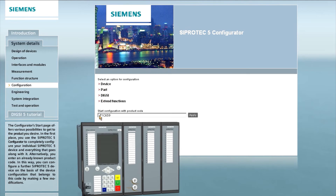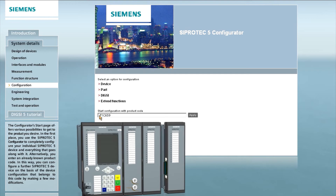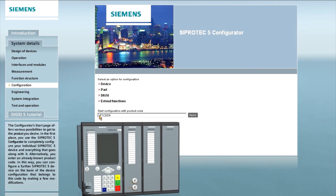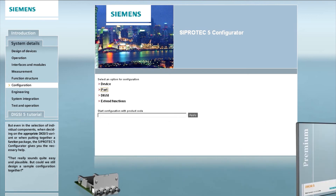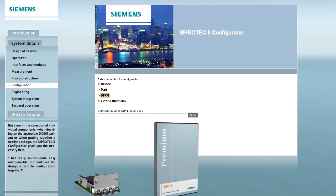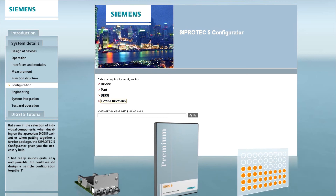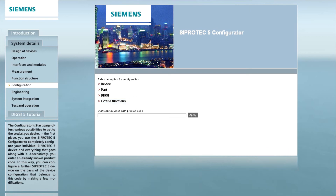Alternatively, you enter an already known product code. In this way you can configure a further CPOTEC 5 device on the basis of the device configuration that belongs to this code by making a few modifications. But even when selecting individual components, when deciding on the appropriate CPOTEC 5 variant, or when putting together a function package, the CPOTEC 5 configurator gives you the necessary help.